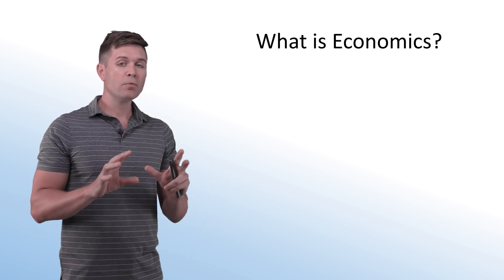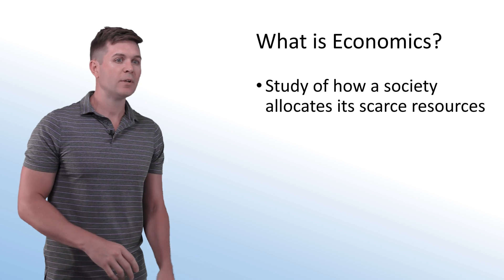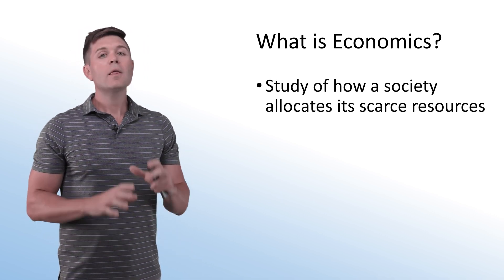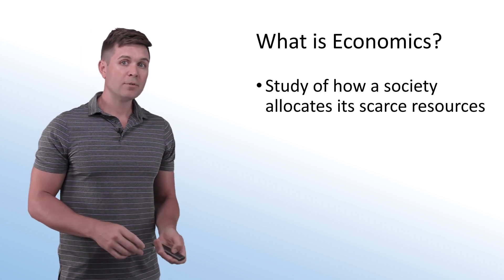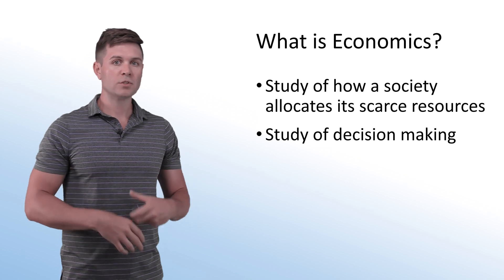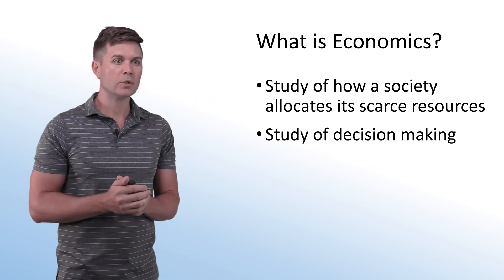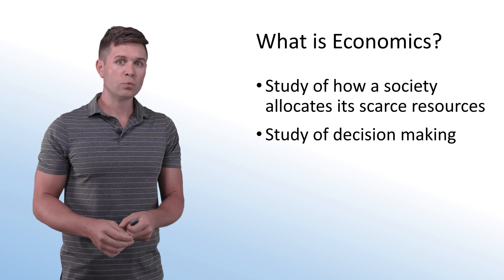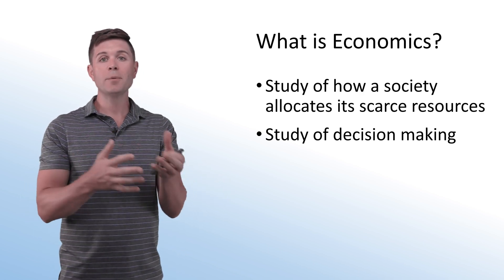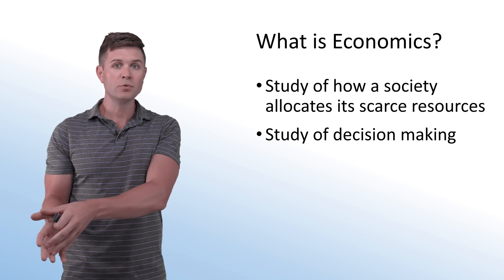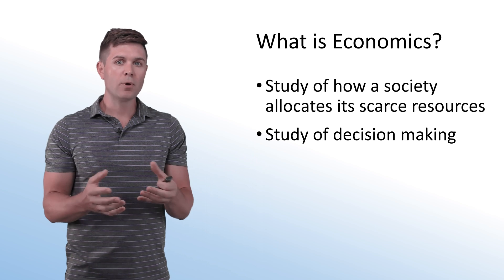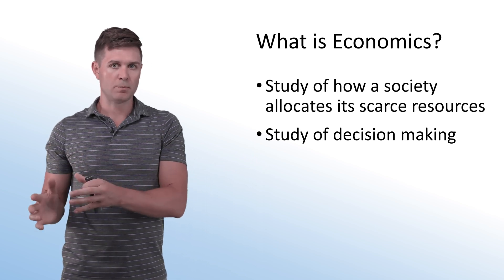In reality, the perfect social science-y definition is the study of how society allocates its scarce resources. The better and more simplistic definition is the study of decision-making, because it's the study of how people make decisions — whether it's an individual deciding on what to purchase, whether it's a company deciding on when to stop producing, whether it's another company deciding on how to ship their product.